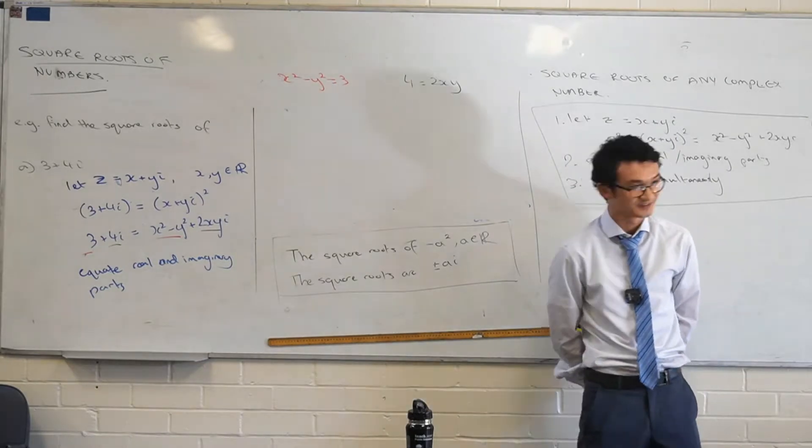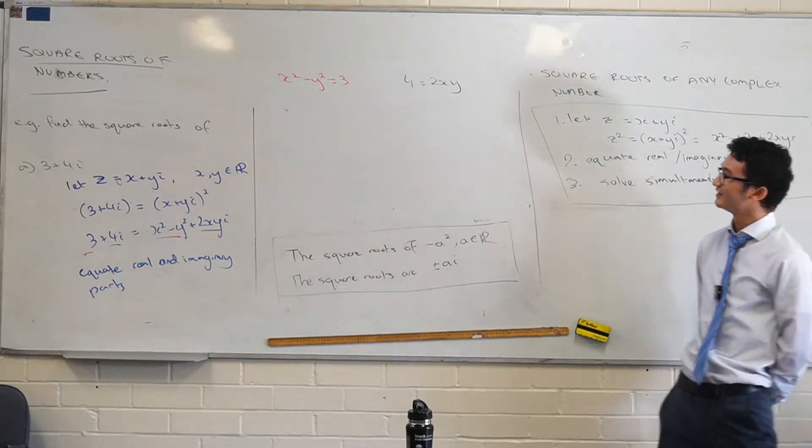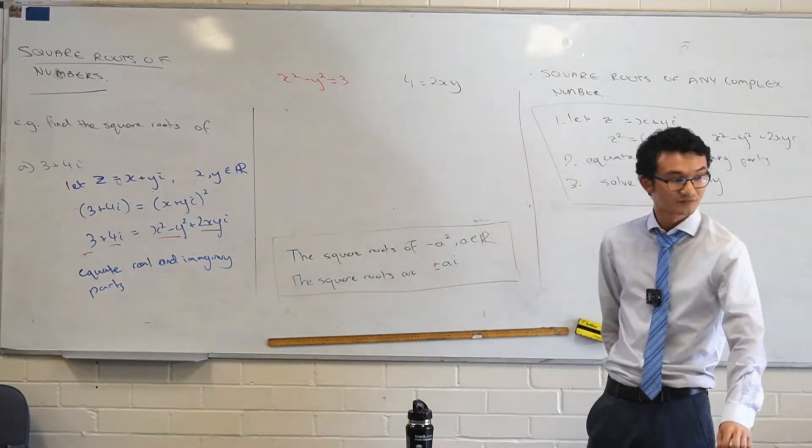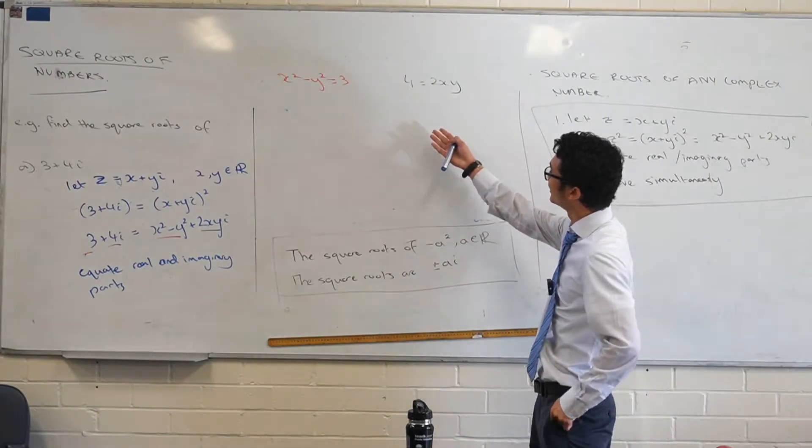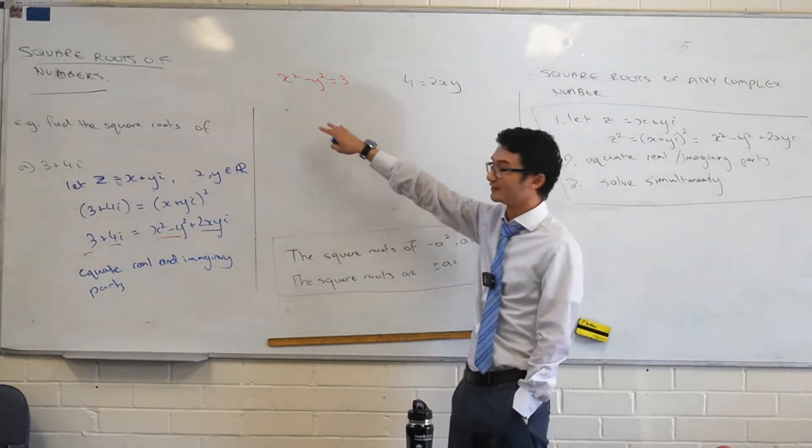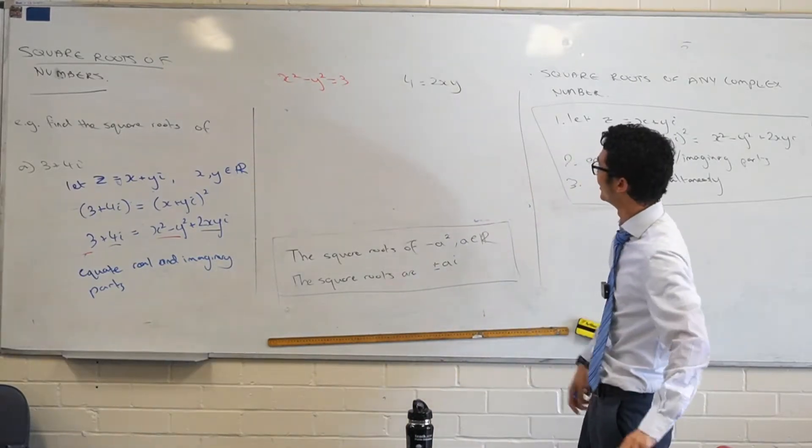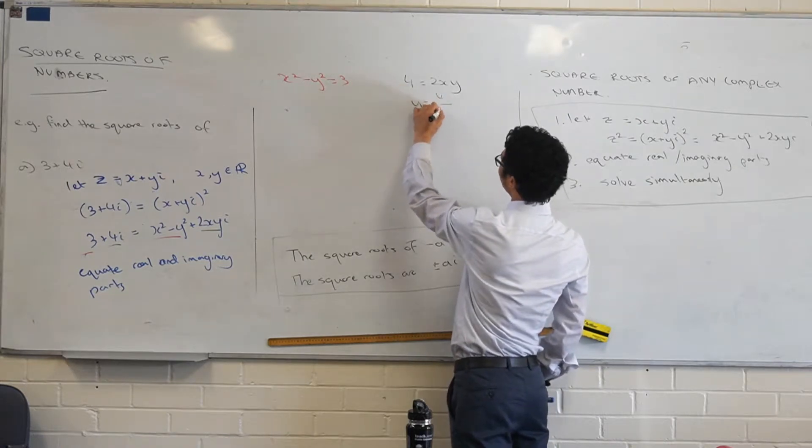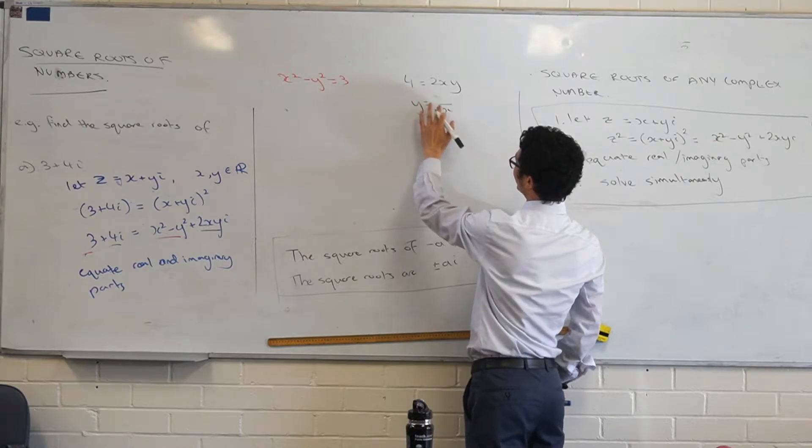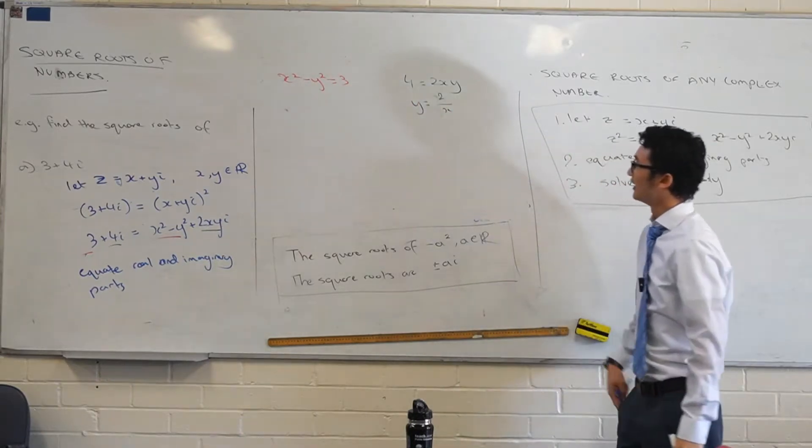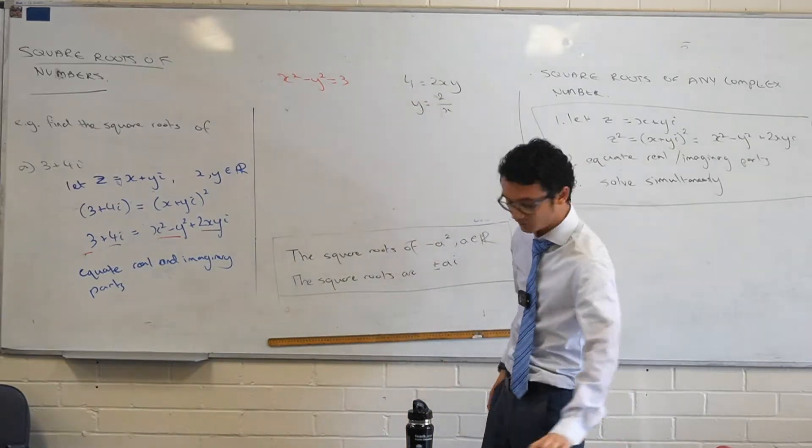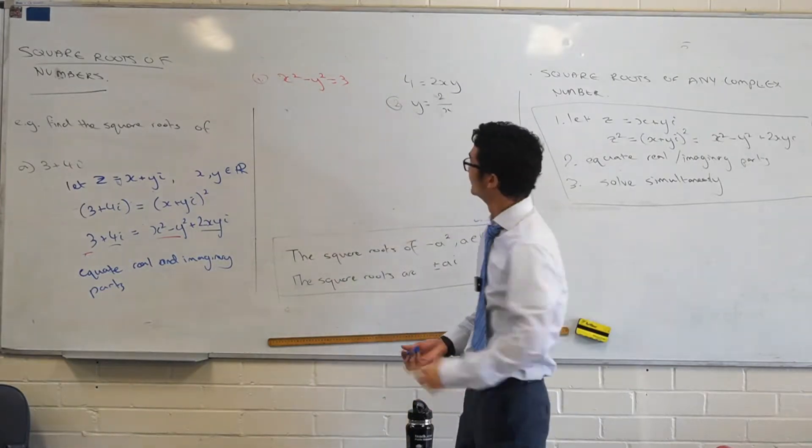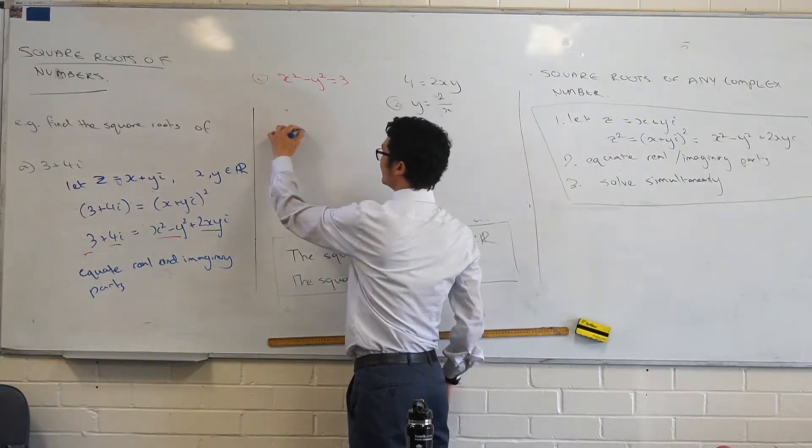All right, next step. What are you thinking? Solve simultaneously. What would be the easiest way to do this? Substitution. So, we go ahead and try and make one as a subject. I've got squares here. I don't really want to work with that. So, let's try and rearrange this one as a subject. Let's say y, potentially. So, we divide both sides by 2x. And that gives us just 2 on x. So, y equals 2 on x. And we go ahead and substitute that into here. So, I've got 1 and I've got 2. So, I'm going to sub 2 into 1.